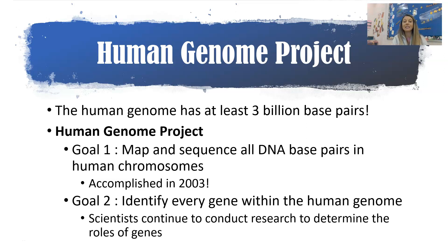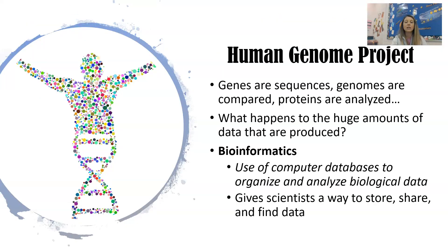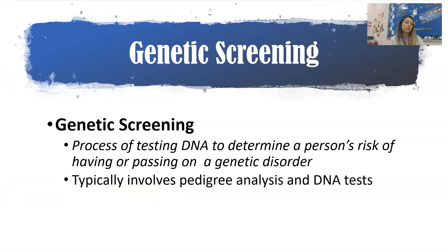In the late 1990s and early 2000s, the Human Genome Project was a major research endeavor. The human genome has about 3 billion base pairs. The project had two goals: to map and sequence all the DNA base pairs in human chromosomes, which was accomplished in 2003, and to identify every gene within the human genome — that's going to take a while. The field of bioinformatics uses computer databases to organize and analyze all of that biological data, giving scientists a way to store, share, and find genetic data.